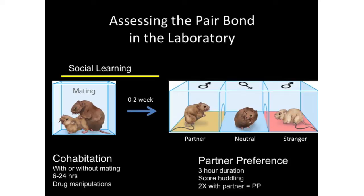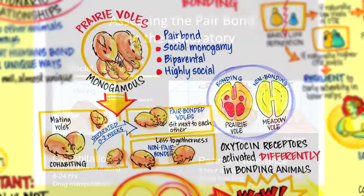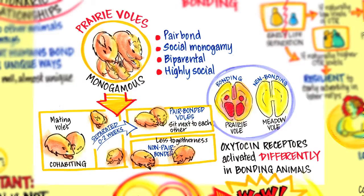Basically, we're asking if the female is bonded with her male partner. We take the male partner, put him on one side — he's tethered so he can move around but can't get out. We put a novel male on the other side, also tethered. We drop the female in the middle and see who she spends her time with. What we find is that if the animals mate, or if we do something to create a bond, the pair-bonded animals will sit next to each other much more than next to the other male. This is how we assess whether the animals have developed a bond.